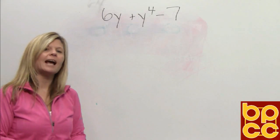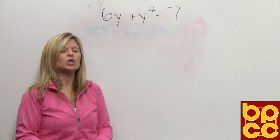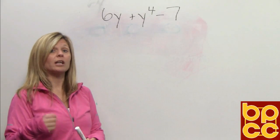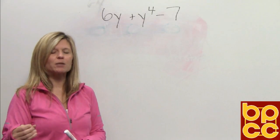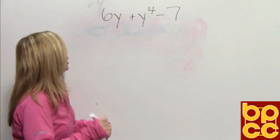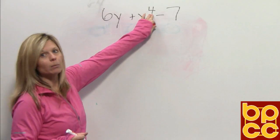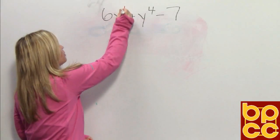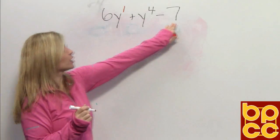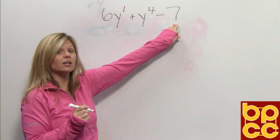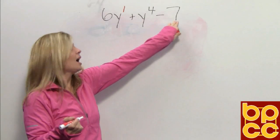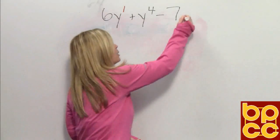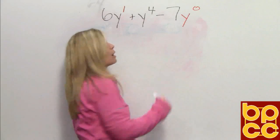In algebra, everything has to be written in descending order, which means the highest exponent to the lowest exponent. So we have to look at each of our terms, look for their exponent, and then order them. This exponent is 4. If we look at this term, we do not see the exponent — it's understood to be a 1. And if we look at this term, which we call the constant, every constant does have a variable, it's just not there. So we would say this is y to the 0.